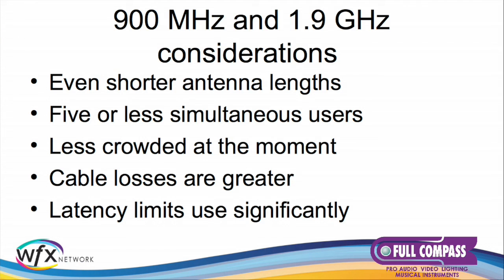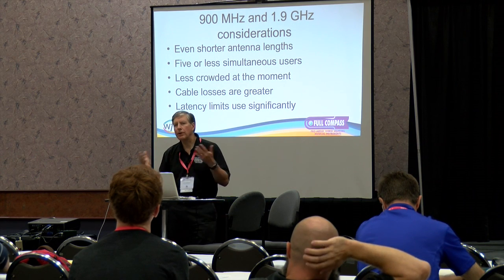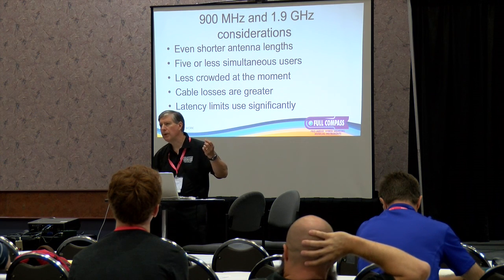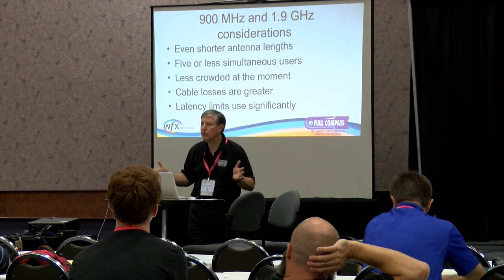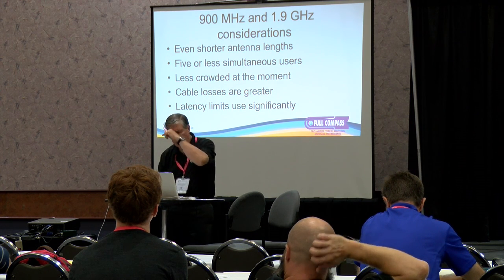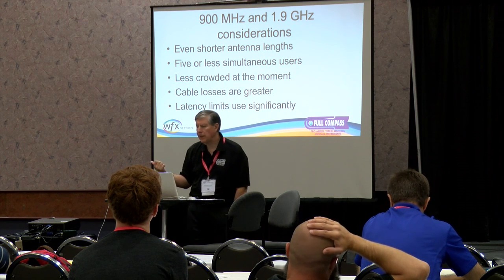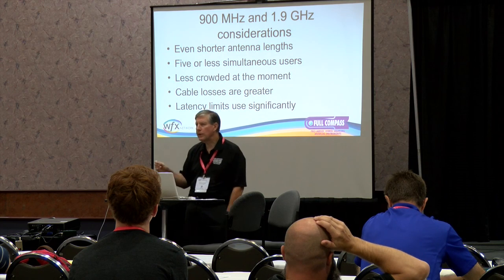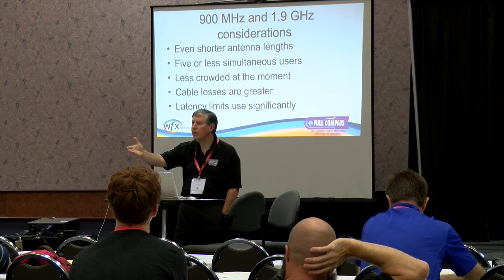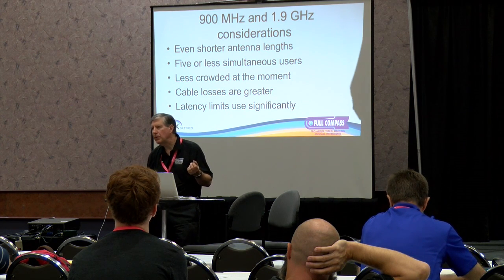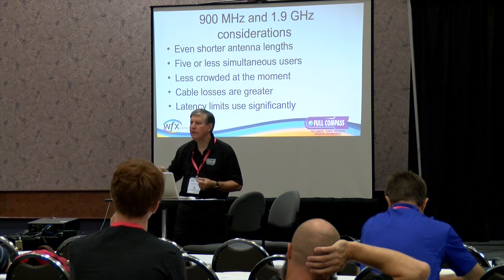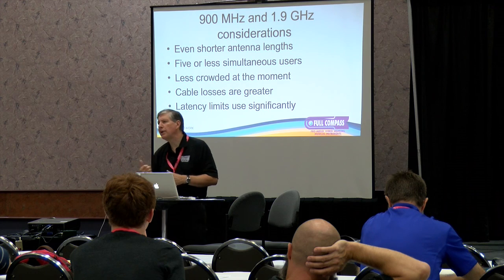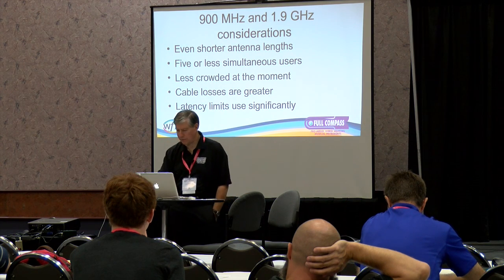At 900 MHz and 1.9 GHz there are also some chunks of spectrum reserved for wireless microphones. Even shorter antenna lengths — easy to build into the body of wireless microphones. The slots of frequencies available are relatively narrow compared to UHF, so it's not a great place if you have to use 10 or 12 channels. Cable losses are much greater at higher frequencies — be aware that the loss in the cable between the antenna and the receiver increases dramatically at UHF and above. At 1.9 GHz there is built-in latency you cannot get around — a guitar player using wireless wouldn't want a highly latent system; when he plucks the string he wants to hear it right now, not later. That latency is part of the definition of how that band works.